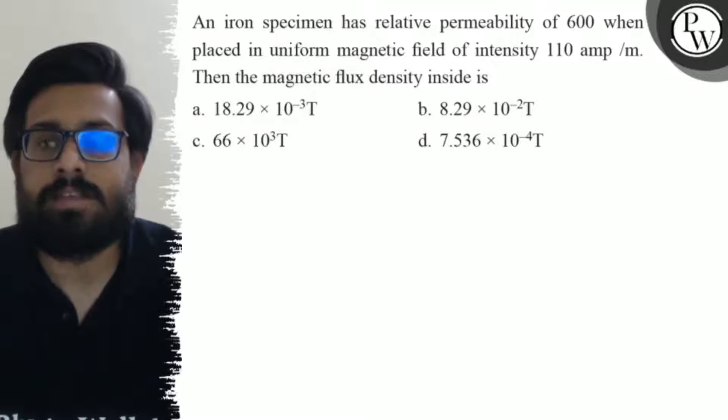Second option is 8.29 into 10 to the power minus 2 tesla. Your third option is 66 into 10 to the power 3 tesla and your fourth option is 7.536 into 10 to the power minus 4 tesla.